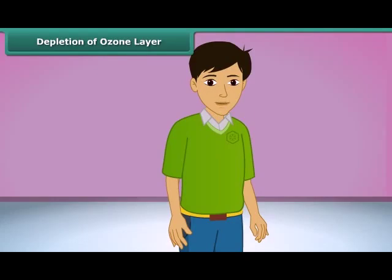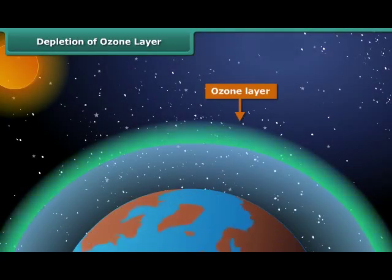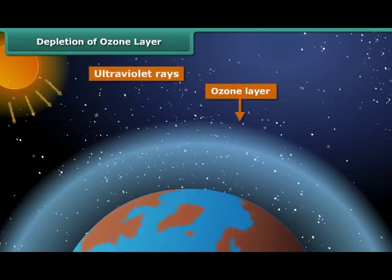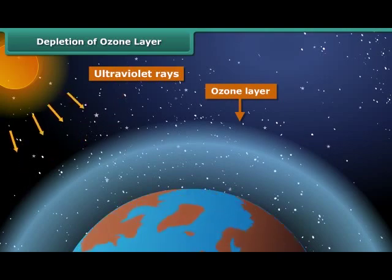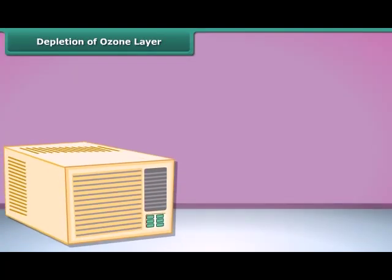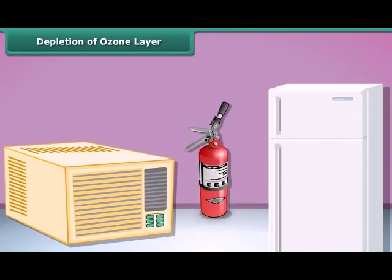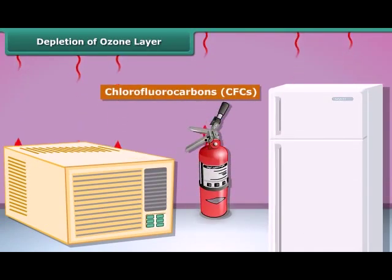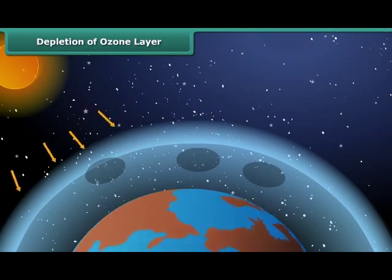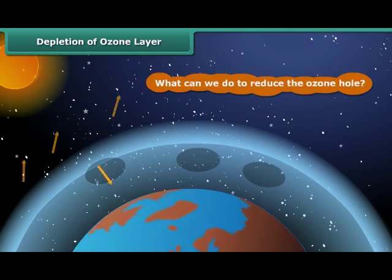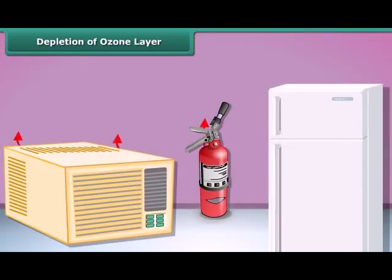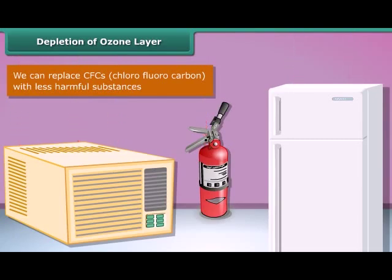Let us learn about the ozone layer. It is a layer of ozone gas in the upper atmosphere of Earth, and it protects us from harmful ultraviolet rays of the sun. Things like air conditioners, refrigerators, and fire extinguishers release chlorofluorocarbons (CFCs) into the atmosphere and create holes in the ozone layer. CFCs are another type of air pollutant. To reduce the ozone hole, we can replace CFCs with less harmful substances to save the ozone layer from depletion.